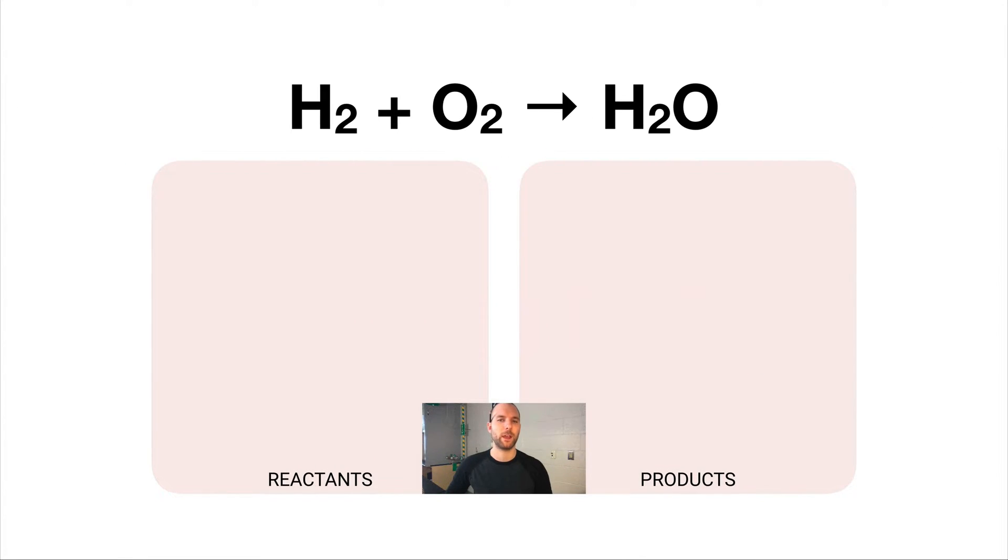But consider a different reaction like this one here. This is a reaction where we're taking hydrogen gas and oxygen gas, and we're generating water, H2O. Now if you look closely at the equation, what you'll realize is that on the left there are two hydrogens, just as there are on the right. But on the left there are two oxygens, and on the right there's only one oxygen. The way that this is written is technically incorrect.